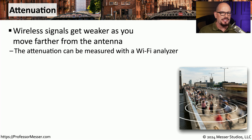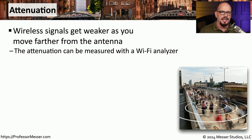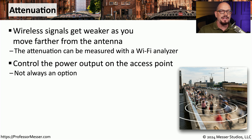As you've probably seen with wireless networks, the farther away you move from the access point, the weaker the signal tends to be. We refer to this as attenuation, and it's a normal part of sending signals over the air. Many administrators measure this attenuation with a Wi-Fi analyzer, walking around the facility to find where the signal is best and worst, and they may be able to make changes to the access point to improve signals in difficult areas. One option is to increase the power output on the access point itself — not all access points support this, but if available, you can find exactly the right amount of power to cover the area you need.